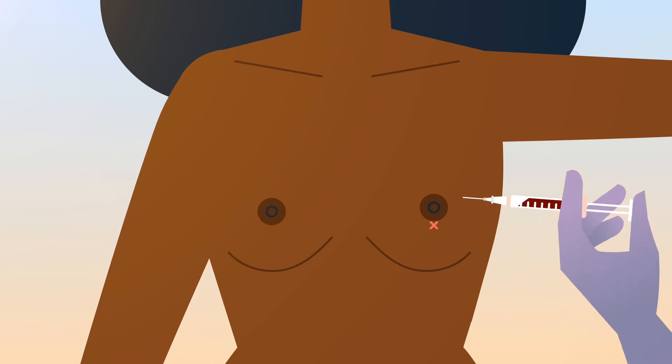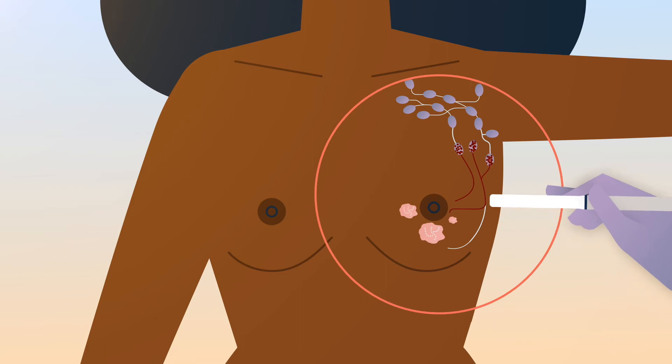During surgery to remove the DCIS, MagTrace is injected into the breast, and will naturally migrate to the sentinel nodes, where it will remain in place and provide a continuous reference for upwards of a month.